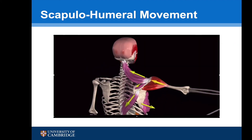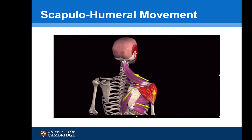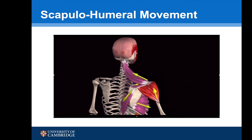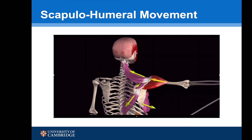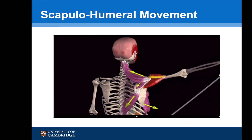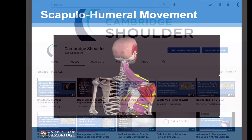Putting all of these components together — the scapula, AC joint, clavicle and SC joint, and the surrounding muscles — go together to form the scapulothoracic joint or articulation, which plays an important part in shoulder movement.